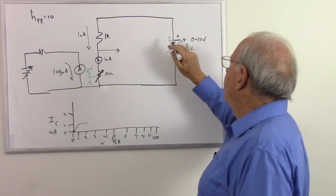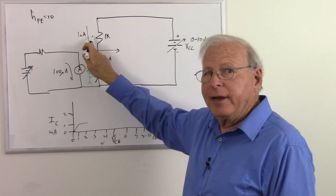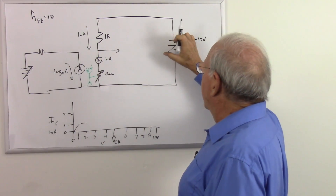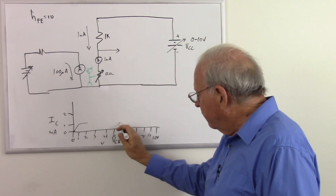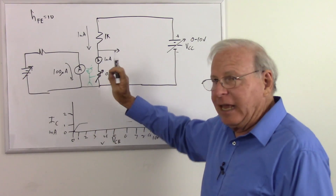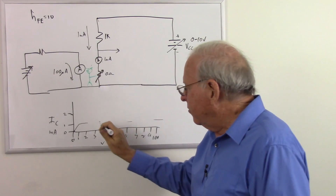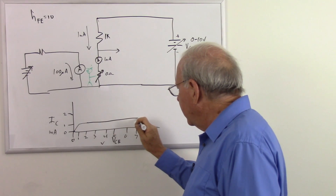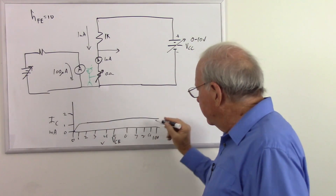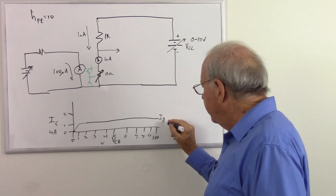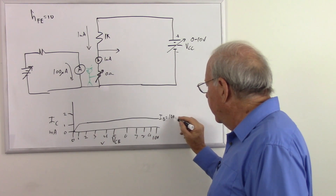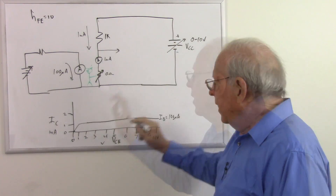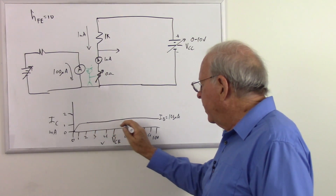So now I increase this voltage — that's going to increase my current — so he increases his resistance to keep it the same. As I keep increasing the voltage, he keeps increasing his resistance so that my collector current does not change. So this line has not changed — that's a base current of IB equals 100 microamps. Regardless of what I do with my VCC, I'm going to get a collector current of 1 milliamp.